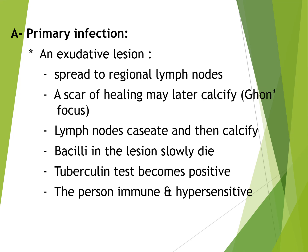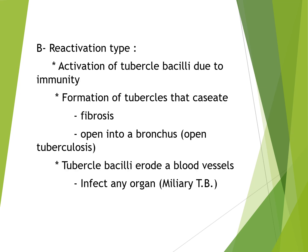In primary infection, exudative lesions spread to regional lymph nodes. A scar of healing may later calcify, and lymph nodes caseate and then calcify. Bacilli in lesions slowly die, the tuberculin test becomes positive, and the person becomes immunohypersensitive. For the reactivation type, activation of tubercle bacilli occurs due to waning immunity. Formation of tubercles that caseate, resulting in fibrosis opening into a bronchus — open tuberculosis. Tubercle bacilli erode a blood vessel and can infect any organ — this is known as miliary tuberculosis.